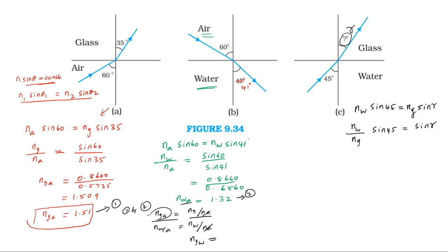Refractive index of glass with respect to water equals 1.51 divided by 1.32, giving 1.1439, rounded to 1.144. This is the refractive index of glass with respect to water.